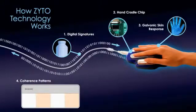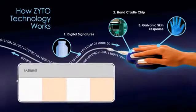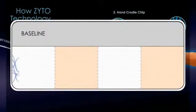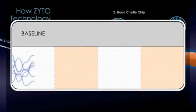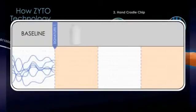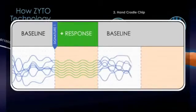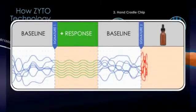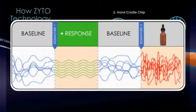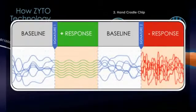Coherence is a state where two or more things exist without conflict. By tracking multiple inputs, ZYTO technology can calculate shifts in coherence as the body responds to each digital signature. Signatures that create greater coherence than the baseline are given a positive score, and signatures creating less coherence than the baseline are given a negative score.